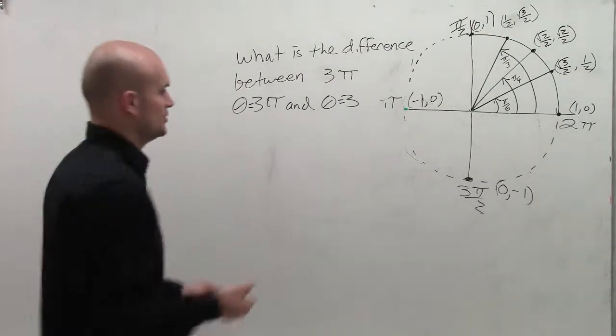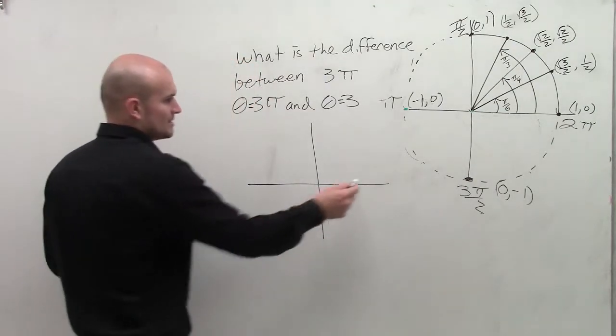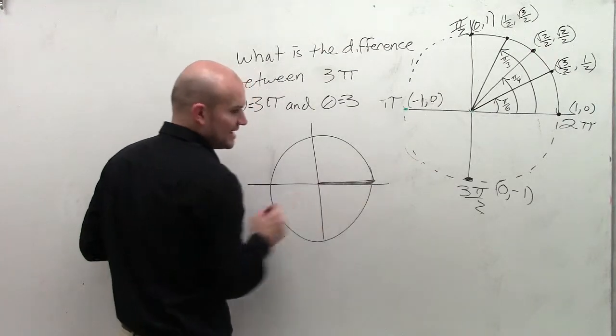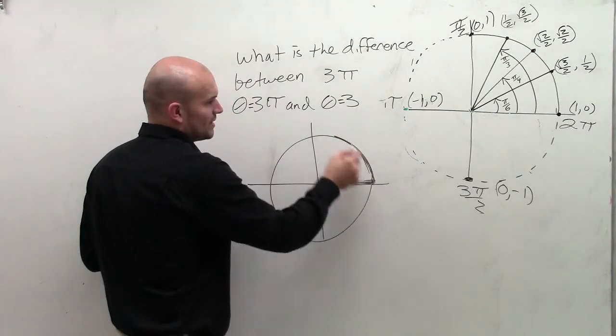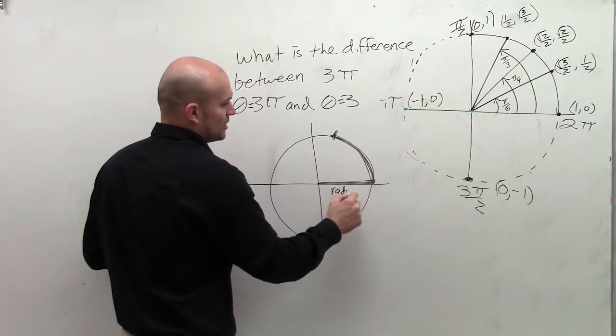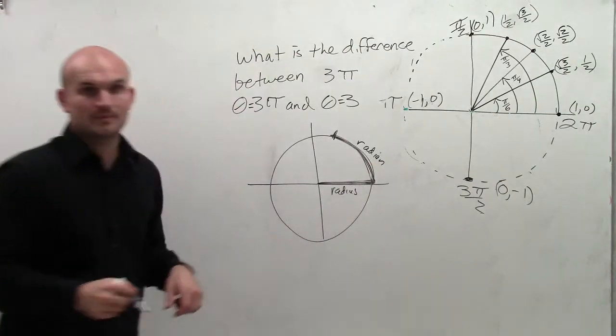So let's go back to our unit circle and just think about a circle in general when we're thinking about radians. Remember, a radian is when we take our radius, right? When you take the distance of your radius and you wrap it around the arc of your circle, what you have is here's what we call a radius, and here's what we call the measurement is 1 radian.